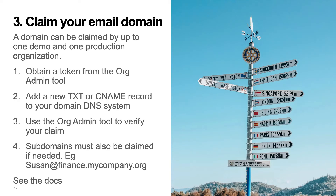Step three is to claim the email domain or domains that your DocuSign account members use. A single email domain such as mycompany.com can be claimed both by your developer account for testing and by your production account. If your users have email addresses that use subdomains of your claimed domain, then you also need to claim each subdomain that's used.